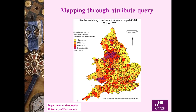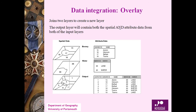Making maps through attribute queries becomes easy: you create intervals and depending on the interval you can clearly see the map, with north indicator, scale, source, and legends — a complete map produced just through attribute query. This is very useful for decision makers.